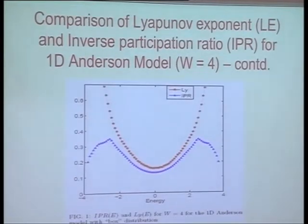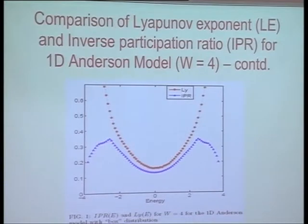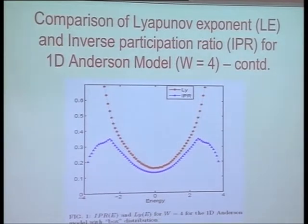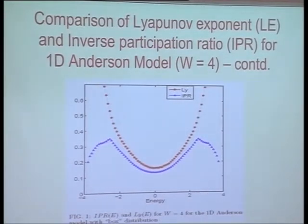However, if you go further, you find something rather dramatic: as you go towards the band edge, the inverse participation ratio goes down, whereas the Lyapunov exponent keeps on going up. The reason for this is something I will show in the next couple of slides. Also notice that the way it goes doesn't seem to be a smooth function — there seem to be some features in this curve.